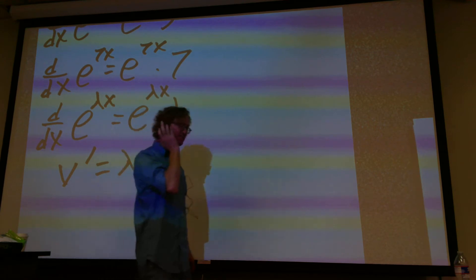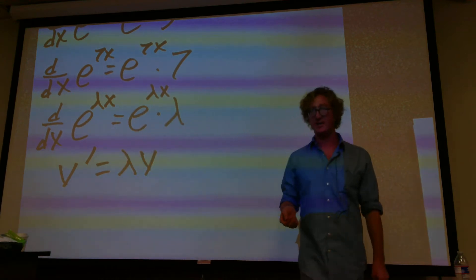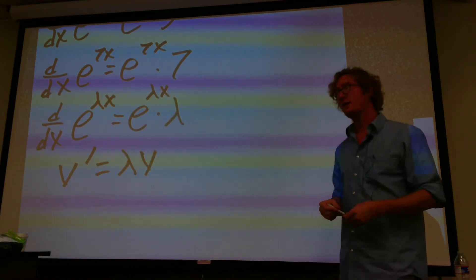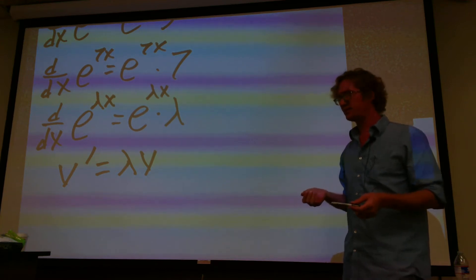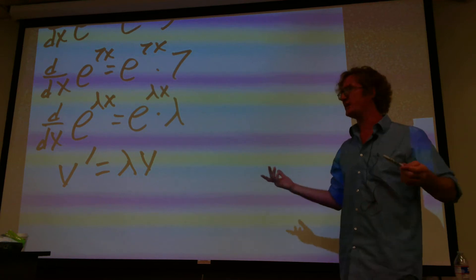Well, what is e? e is just a number. It's a special number. But, that's all it is, is a number. So, what if I try to take the derivative of something that didn't have an e in it?